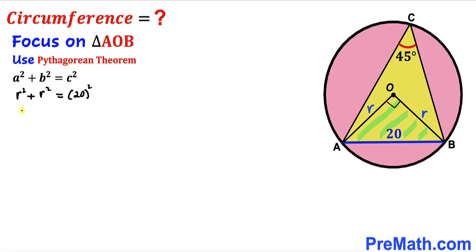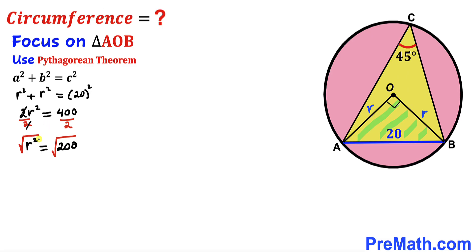Let's simplify. That gives us 2r squared equals 400. Now I am going to divide both sides by 2, so r squared equals 200. Now I am going to undo this square by taking a square root on both sides. Therefore, our radius r turns out to be 10 times the square root of 2 units.